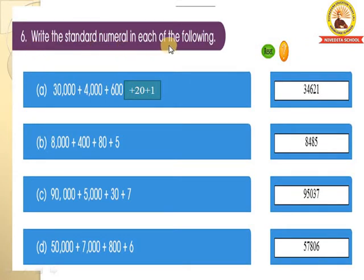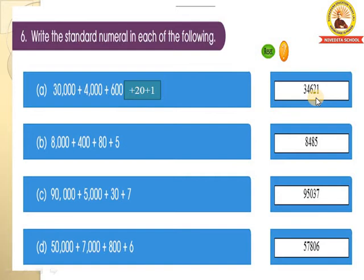Write the standard numerals for each of the following. A: 30,000 plus 4,000 plus 600 plus 20 plus 1 is given children. They have given the expanded form and we have to write it in the standard form. So: 3, 4, 6, 2, 1 — the standard form is 34,621.